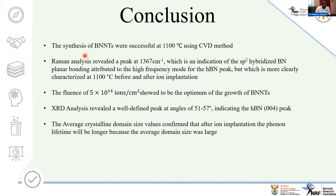In conclusion, the synthesis of boron nitride nanotubes was successful at 1100°C. Raman analysis revealed a peak at 1367 cm⁻¹, indicating the sp² hybridized B-N peak. A fluence of 5×10¹⁴ showed the optimum growth of boron nitride nanotubes. XRD revealed a well-defined peak at around 55° confirming the h-BN peak. The average crystallite domain size confirmed that after ion implantation the phonon lifetime is longer because the average domain size is larger.